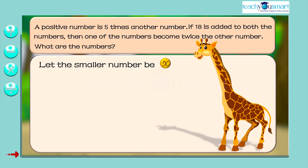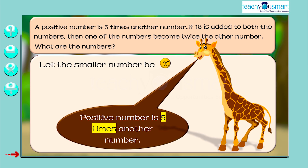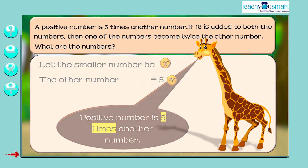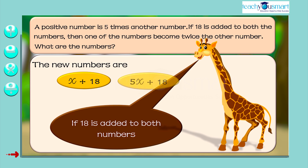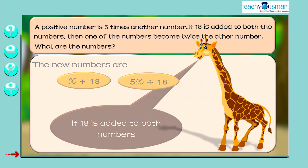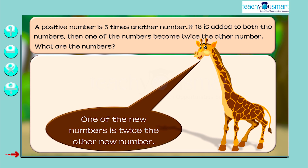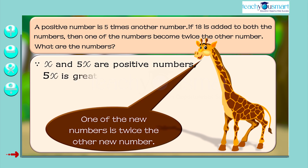Let the smaller number be X. Given that a positive number is five times another number, so the larger number is 5X. If 18 is added to both the numbers, the new numbers are X plus 18 and 5X plus 18. Given that one of the new numbers is twice the other, since X and 5X are positive numbers and 5X is greater than X, we can take 5X plus 18 equals 2 times X plus 18.